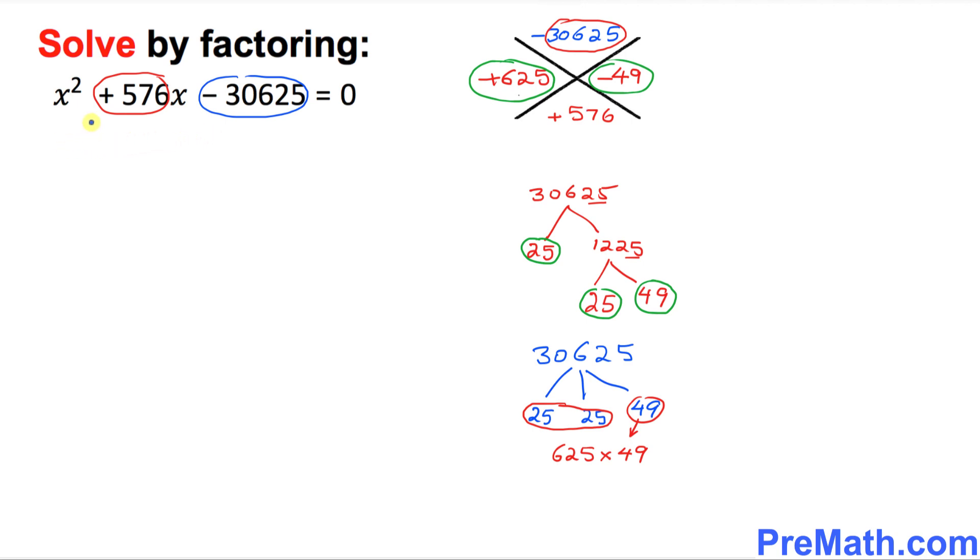Our next step is I want you to put down two parentheses since we are going to factor this one out. First, I want you to write down x over here and x over here. Next thing is what you got over here, this is positive 625, just write down positive 625 in one factor. The other one is negative 49 on this side, and we have it equal to zero.